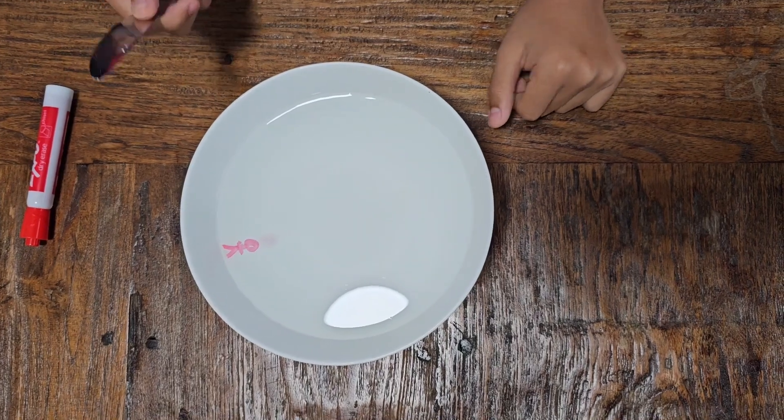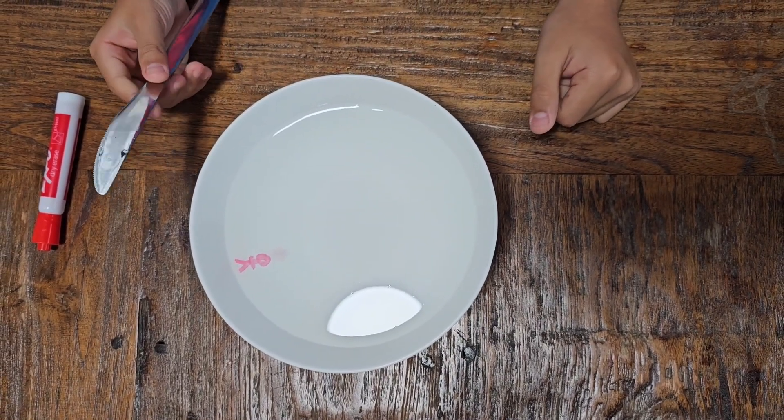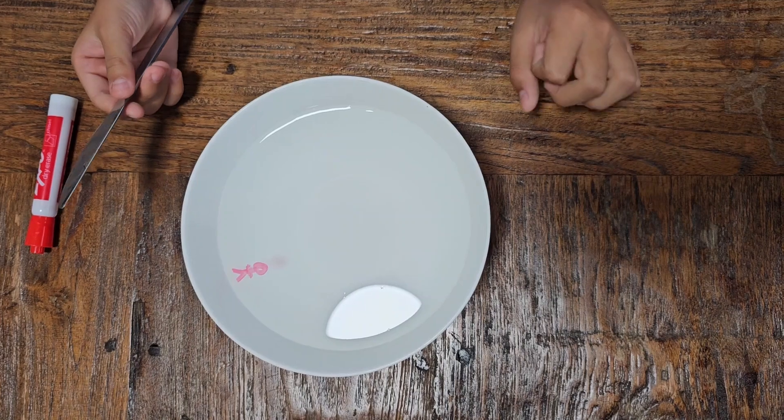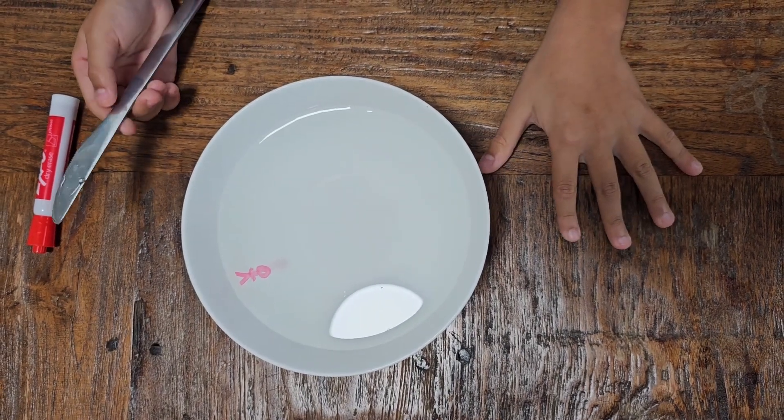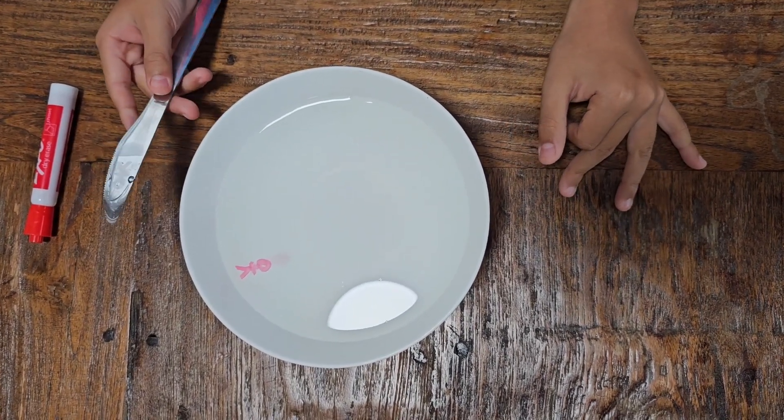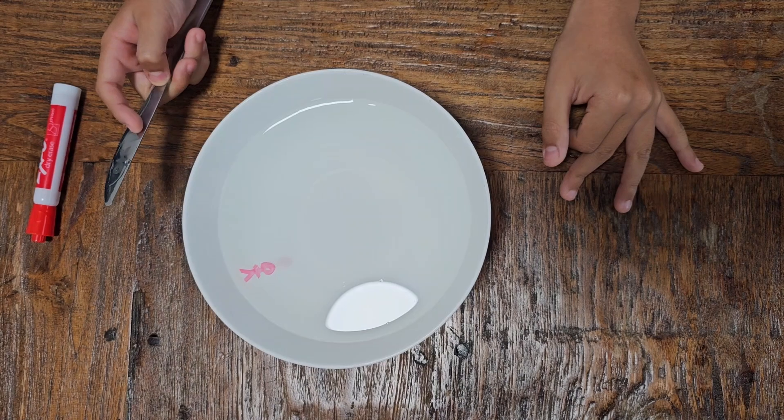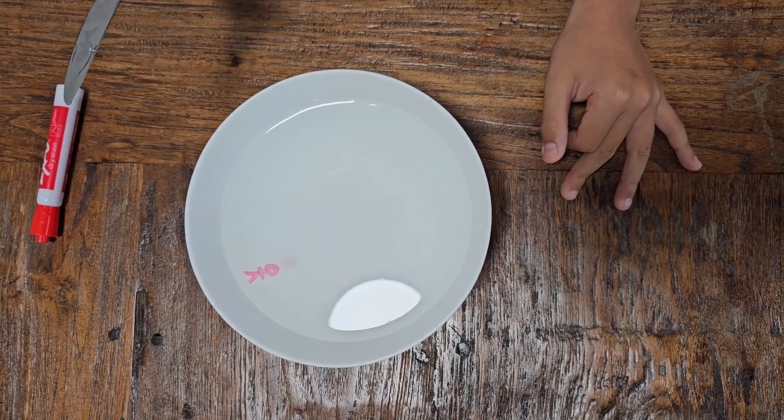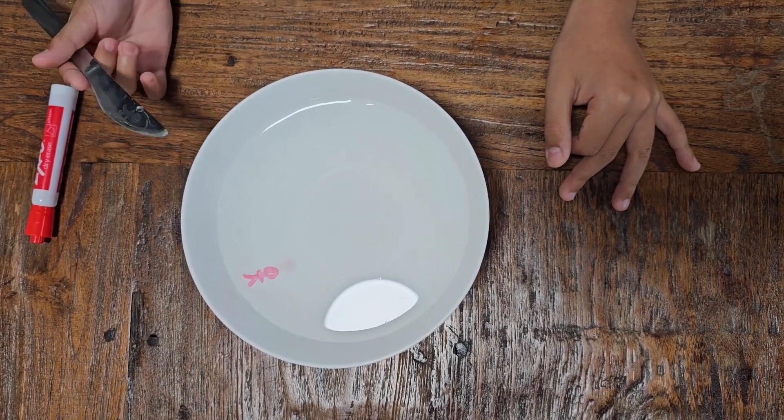This works because the whiteboard markers are made to be erased, so it lacks stickiness. The stick man can't stick to the knife because the water has more density than the marker does.